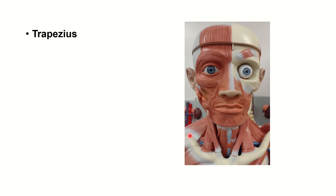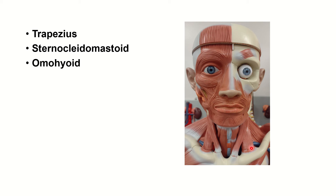Some other muscles visible here: this is the trapezius muscle, which is a back muscle but you can still see it from this view. Sternocleidomastoid. Omohyoid — it's a little bit difficult to see because it is partially covered by the sternocleidomastoid.